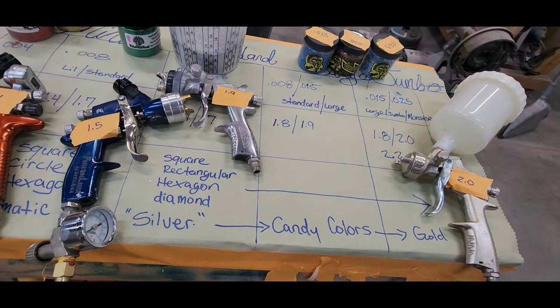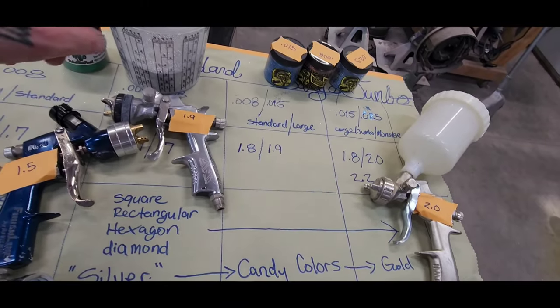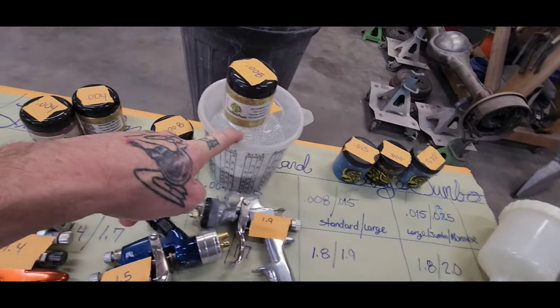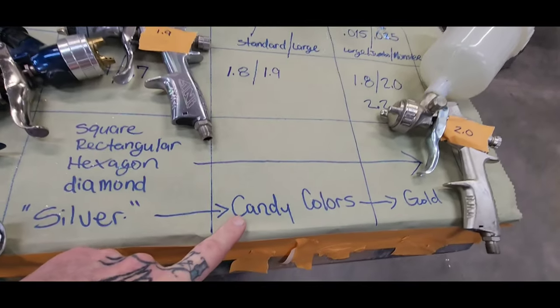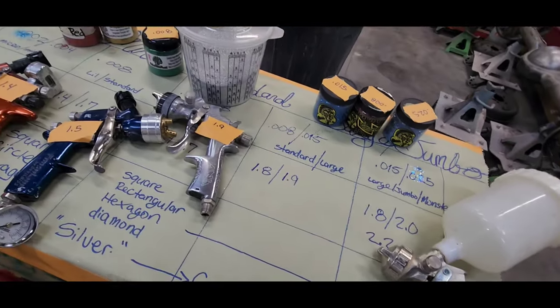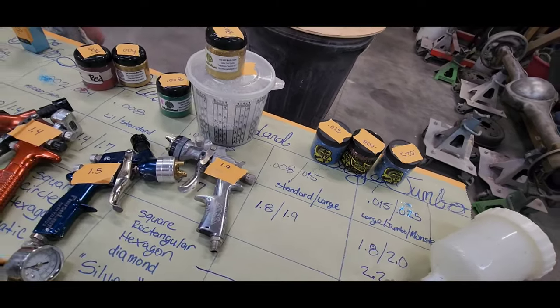And the reason why I use the silver and the gold a lot is because of this right here. Candy colors. Just like on my guitar job that I just did, I used the silver as a base, and then I went over top of it with multiple candy colors, and that's how you do a real candy paint job.